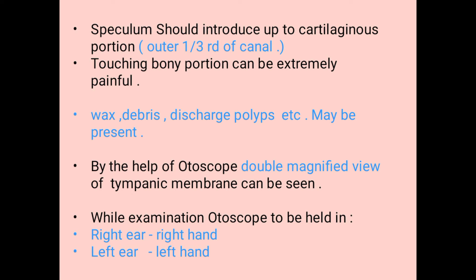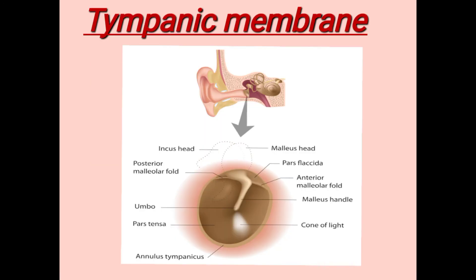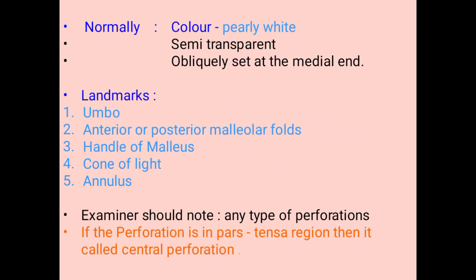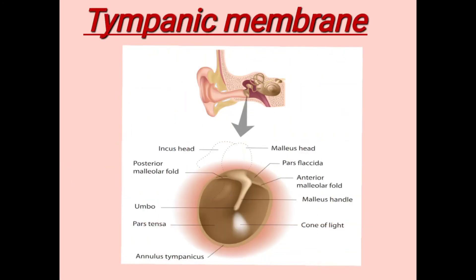By the help of the otoscope, a double-magnified view of the tympanic membrane can be seen. While examining, the otoscope should be held in the right hand for the right ear, and in the left hand for the left ear examination. The normal tympanic membrane is pearly white in color, semi-transparent, and obliquely set at the medial end.